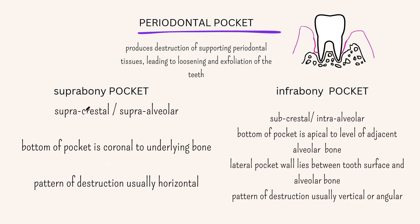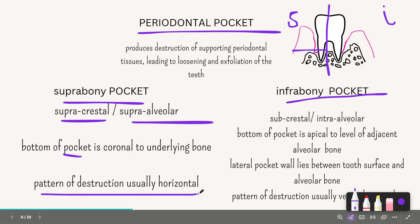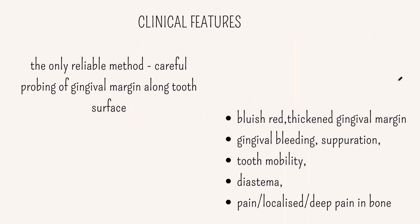Periodontal pockets can be either suprabony or infrabony. The suprabony pocket, also known as supracrestal or supraalveolar, has the bottom of the pocket coronal to the underlying bone, with a horizontal pattern of bone destruction. The infrabony pocket, also known as subcrestal or intraalveolar, has the bottom of the pocket apical to the level of the adjacent alveolar bone, with vertical or angular bone destruction.